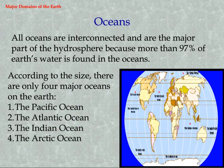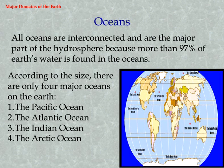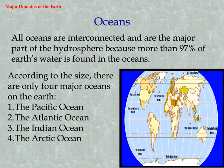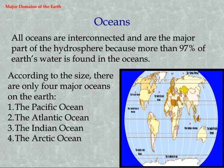Oceans. All oceans are interconnected and are the major part of the hydrosphere because more than 97% of Earth's water is found in the oceans. According to size, there are four major oceans on the Earth: 1. The Pacific Ocean, 2. The Atlantic Ocean, 3. The Indian Ocean, and 4. The Arctic Ocean.